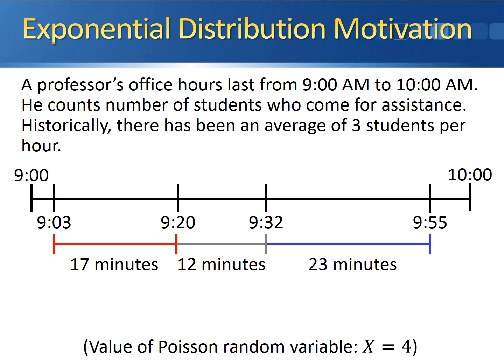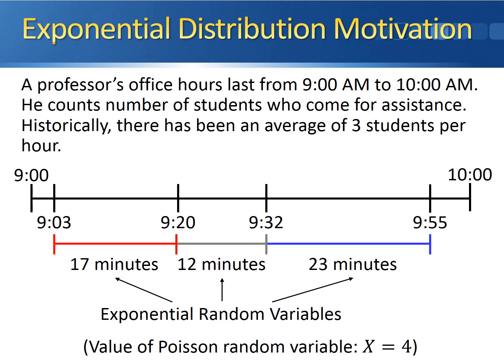The value of the Poisson random variable was x equal to 4. For the exponential distribution, these times between arrivals turn out to be our exponential random variables. In the exponential distribution we're concerned about the amount of time between arrivals, not the number of arrivals.